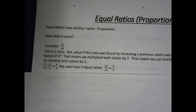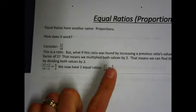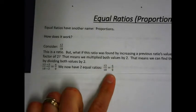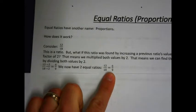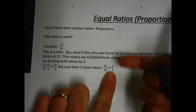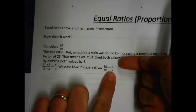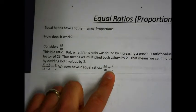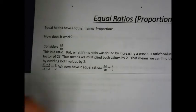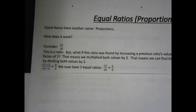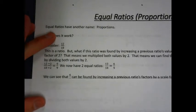So what do we have here? We now have 2 equal ratios — we now have a proportion. This is a proportion: 2 equal ratios. 12 to 18 is, in fact, equal to 6 to 9. That is an equal ratio, that is a proportion.